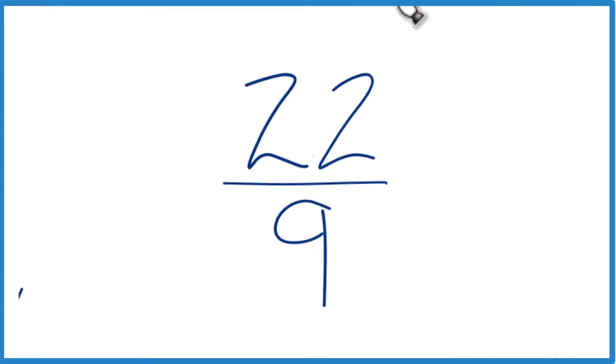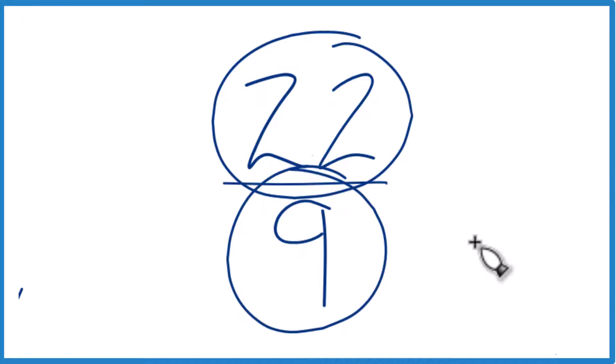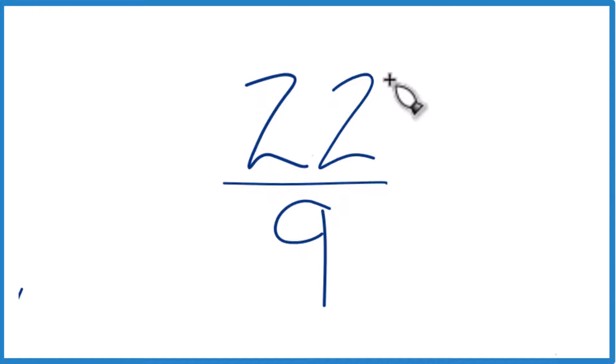Someone asked me how I might go about converting 22 ninths to a mixed number. So right now this is called an improper fraction because the numerator, 22, that's bigger than the denominator, 9.